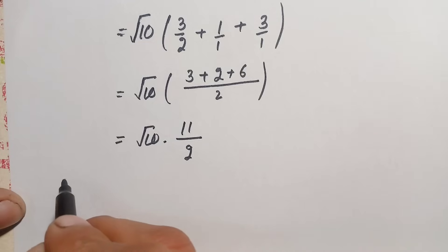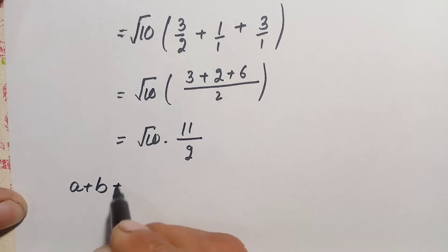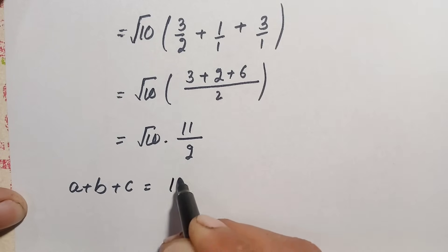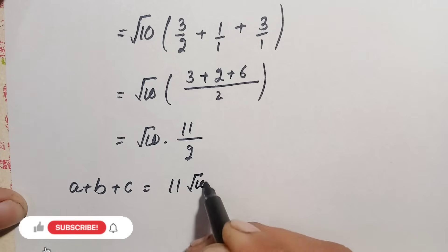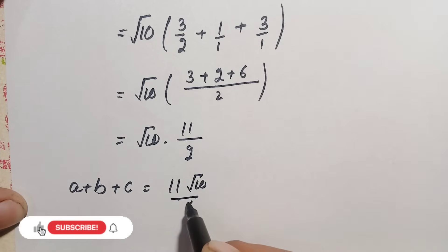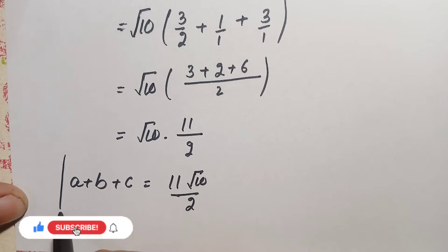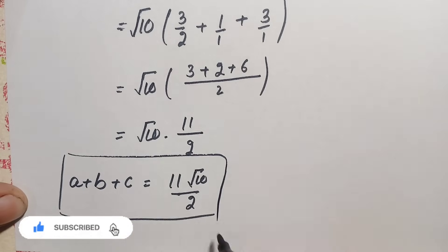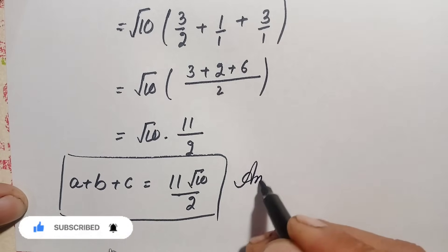Therefore the final value of a + b + c is 11√10 divided by 2. This is our required answer.